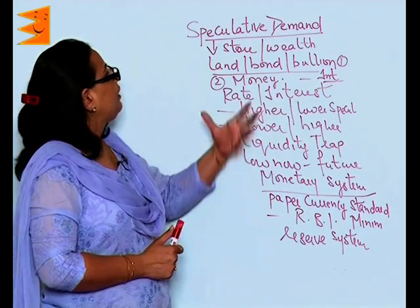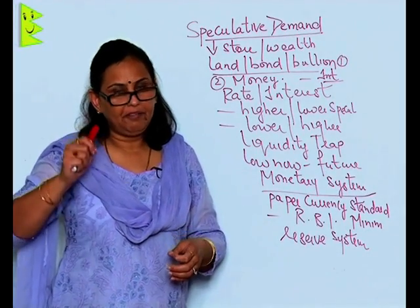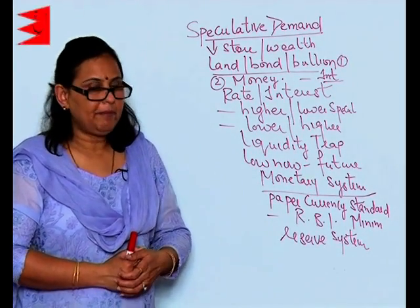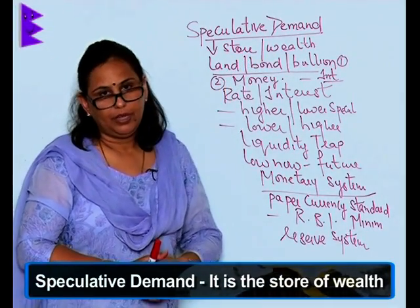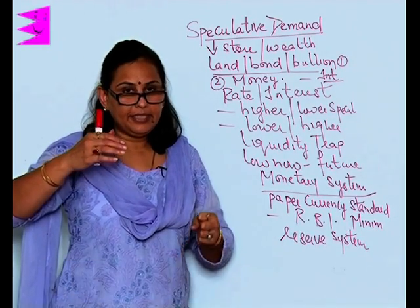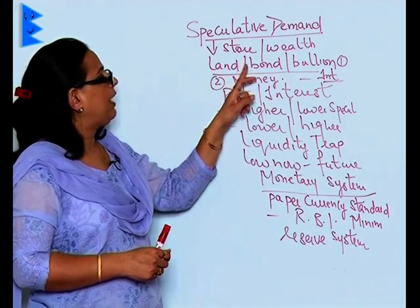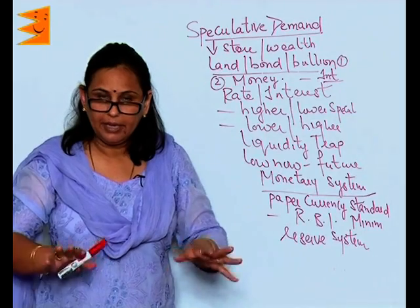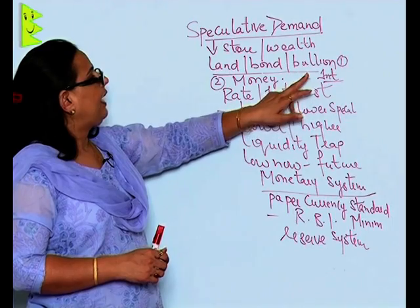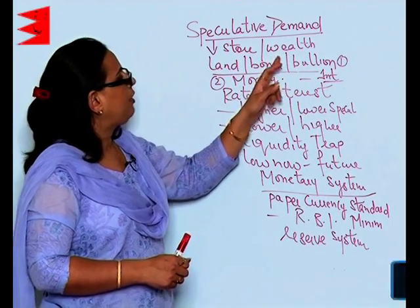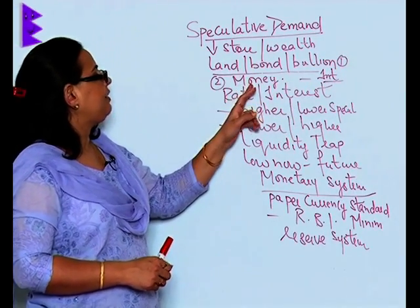Let's study the speculative demand of money. In simple layman's terms, it means it is a store of wealth. This store of wealth is done in many forms — it can be in the form of buying land, buying bonds, buying bullions, or keeping the money as such. To simplify, we can put land, bond, and bullion under one category called 'bond,' and the second category shall be money.